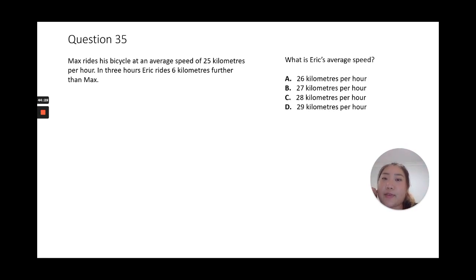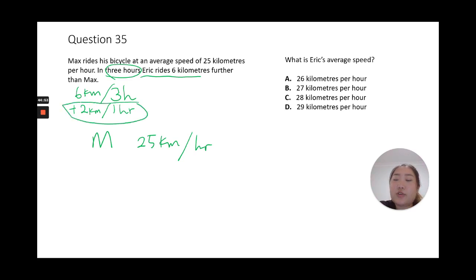Question 35: We know that Max cycles 25 km per hour. We also know that Eric in three hours rides six kilometers further. So in three hours, if you ride six kilometers extra, then in one hour, per hour, how much extra does he ride? Two kilometers. Every hour is going to add an extra two kilometers.